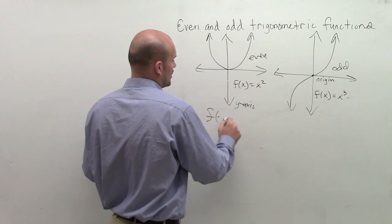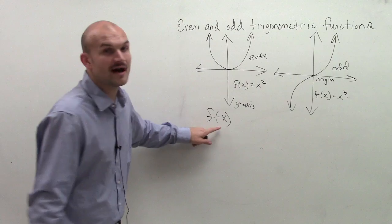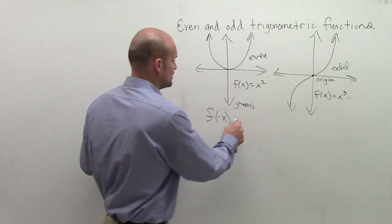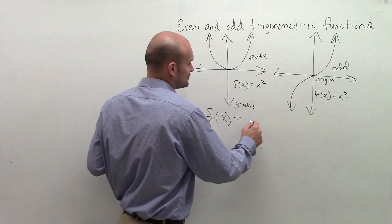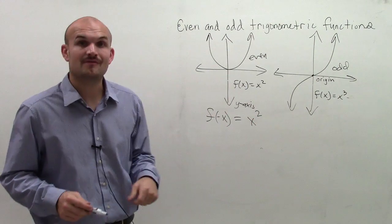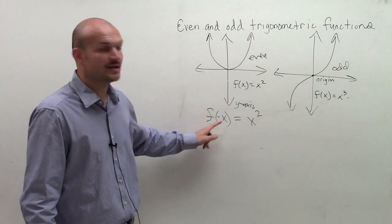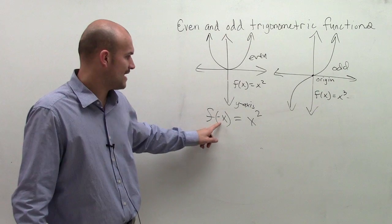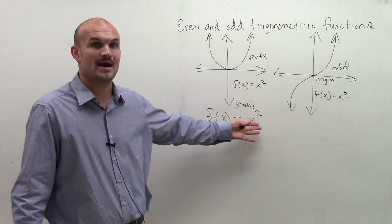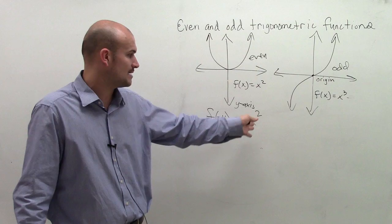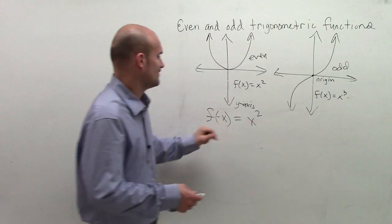If I take f of negative x, that means if I plug in negative x into my function and I get back out x squared, that means my function is even. So if I plug in negative x into my function and I get back x squared, therefore I have an even function.